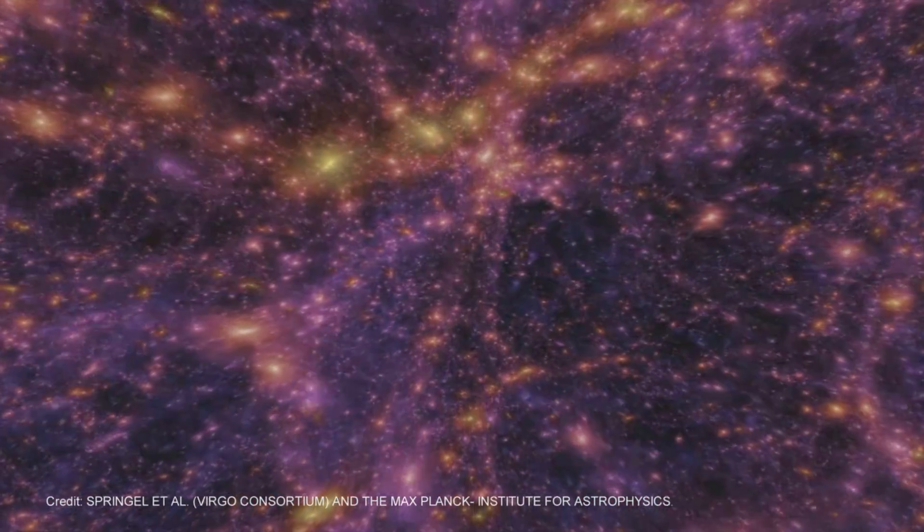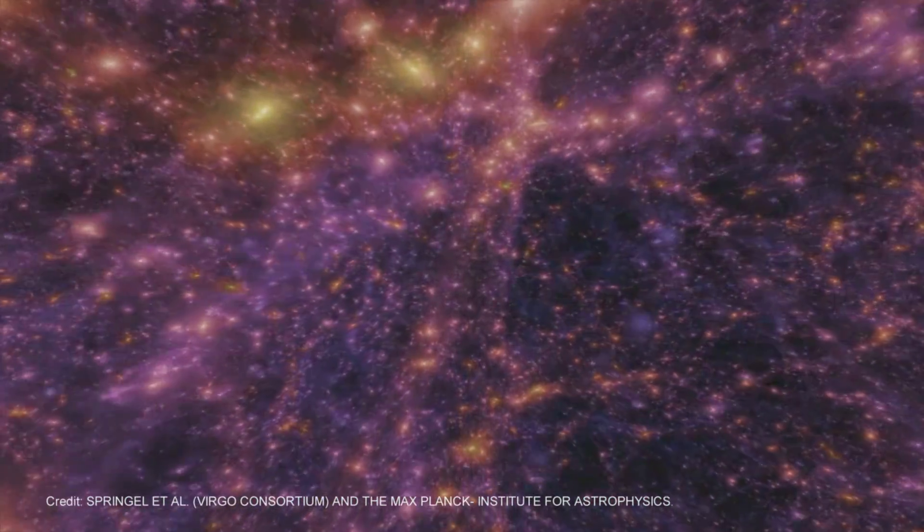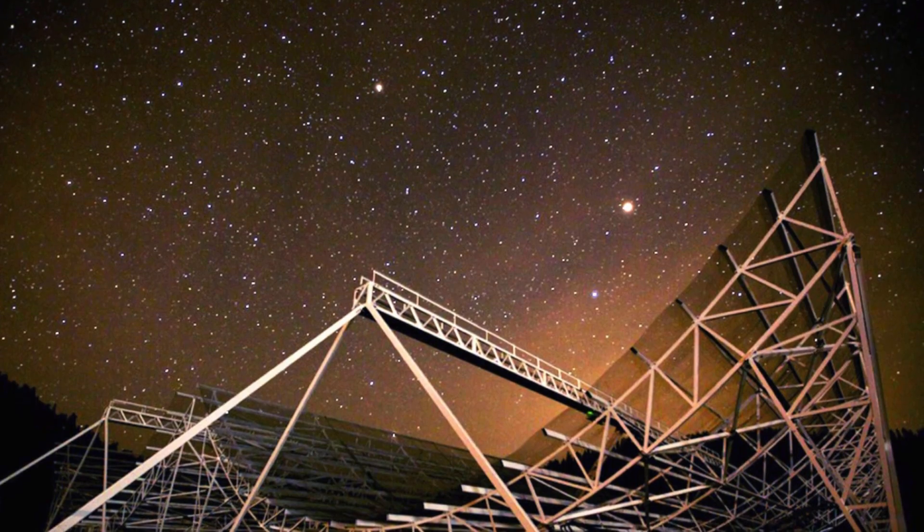On very large scales, the universe looks like a web-like structure. You have these big clusters of galaxies with thousands or hundreds of thousands of galaxies in them, and between these clusters you have long filaments. It looks like a cobweb of how the galaxies and matter in the universe are distributed.